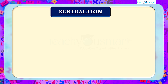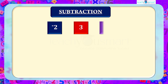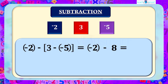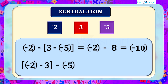Now let's look at subtraction of integers. We will continue with the same three integers: minus 2, 3, and minus 5. Let's group the operation in two different ways. First: (minus 2 minus 3) minus minus 5 equals minus 5 minus minus 5 equals minus 10. And second: minus 2 minus (3 minus minus 5) equals minus 2 minus 8 equals minus 5 plus 5 equals 0.